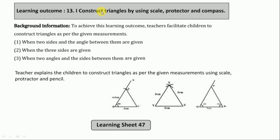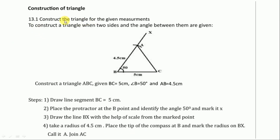In today's class, we will solve learning outcome number 13.1 — Construction of triangles using scale, protractor, and compass. Learning sheet number 47: Construction of triangles. 13.1: Construct the triangle for the given measurement. To construct a triangle when two sides and the angle between them are given. This is the step to draw a triangle.